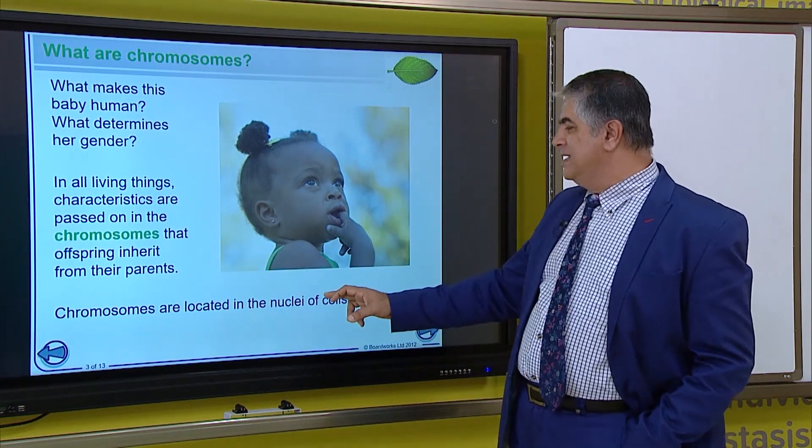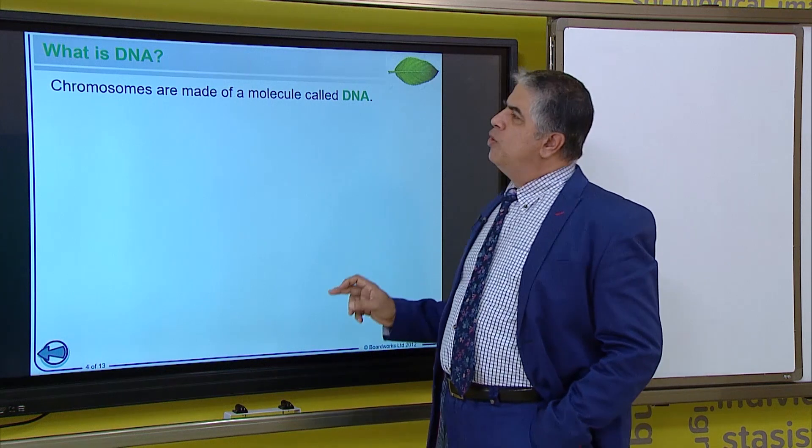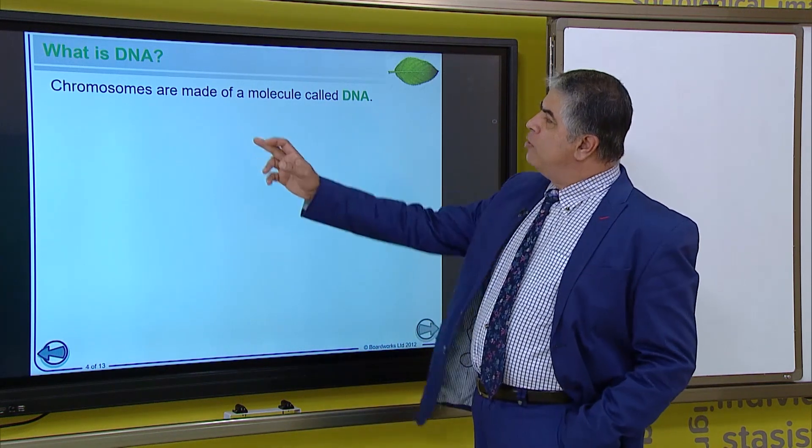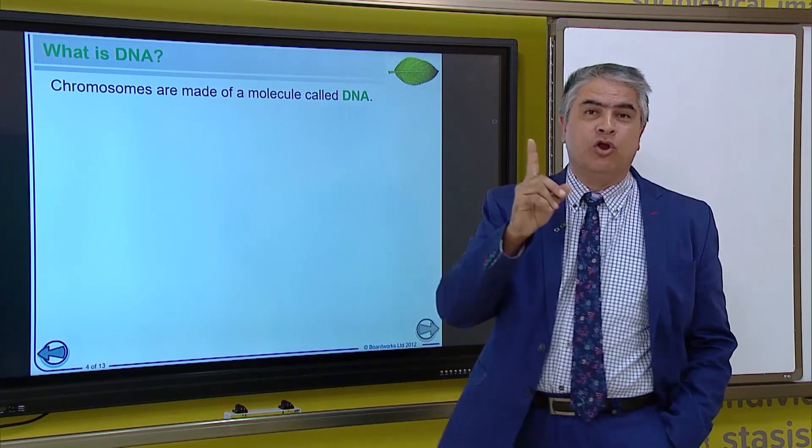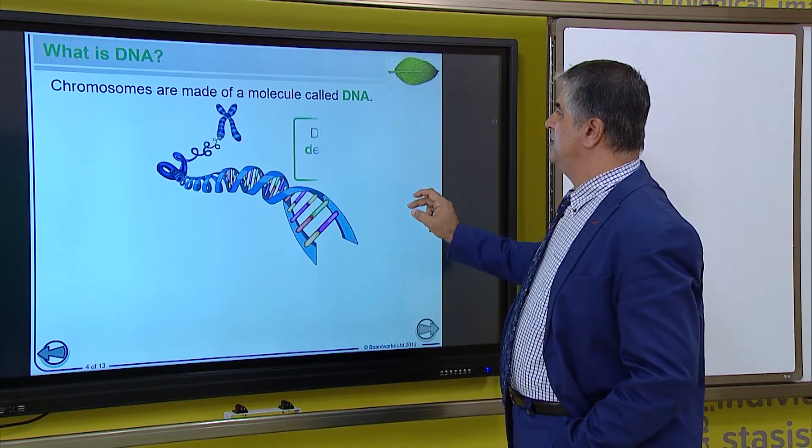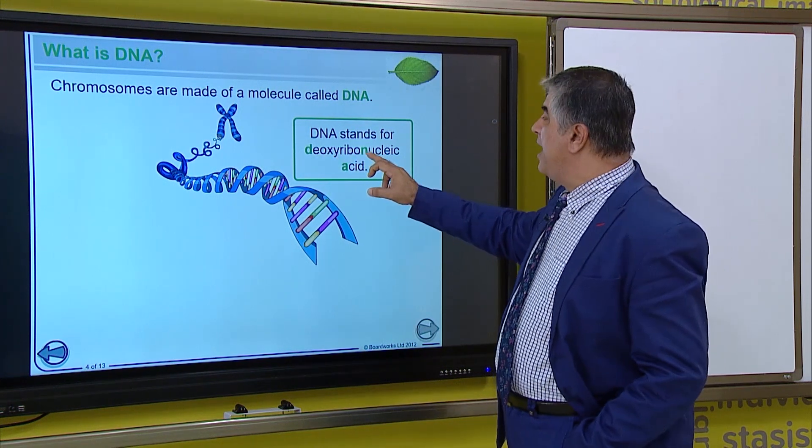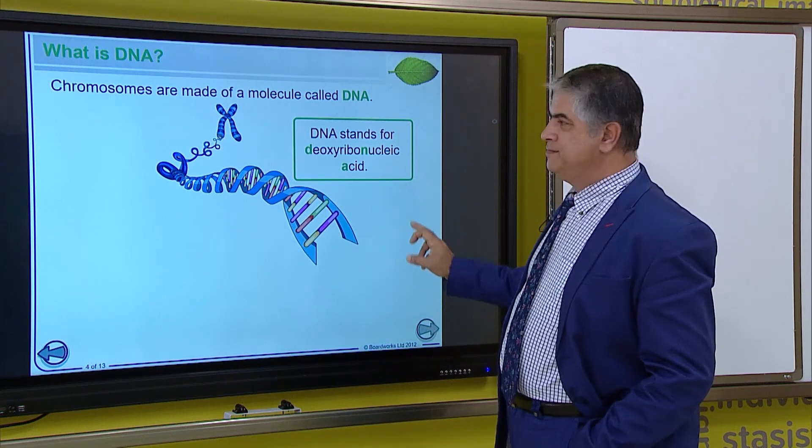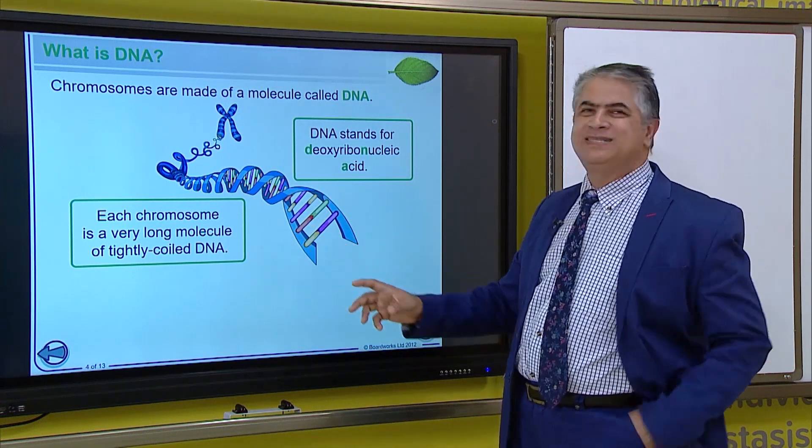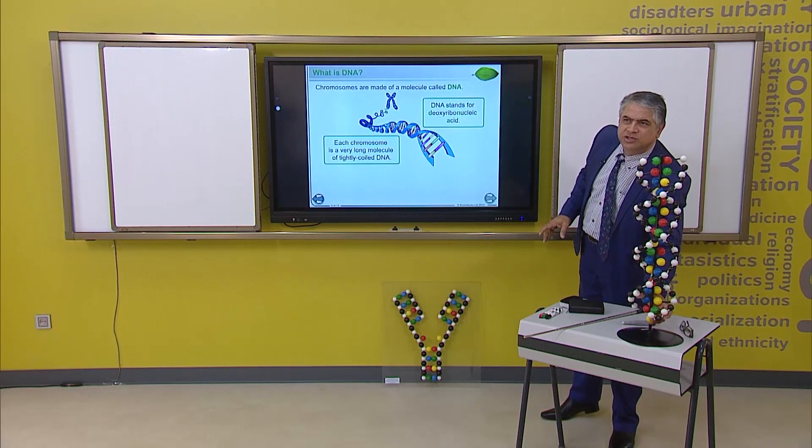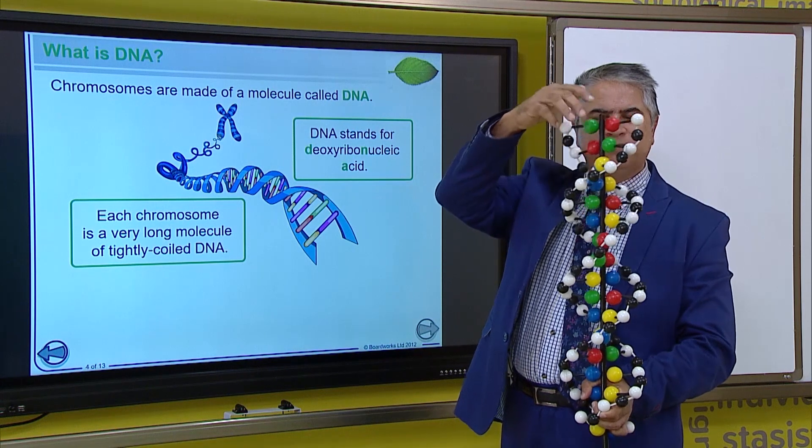Chromosomes are located in the nucleus of the cell. So, what is DNA? Chromosomes are made up of a molecule called DNA. A molecule. A single molecule. DNA stands for deoxyribonucleic acid. Each chromosome is very long molecule, which is tightly coiled DNA. It looks just like this. It's tightly coiled. It is a coil spiral form coil.